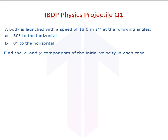Welcome to Tribe Topper. We have a question here: a body is launched with a speed of 18 meters per second at the following angles. Find the x and y components of the initial velocity in each case.